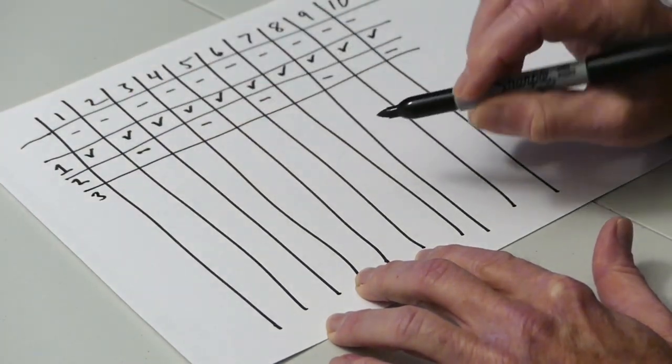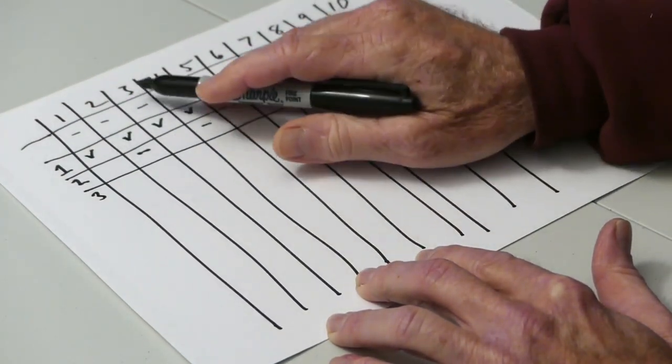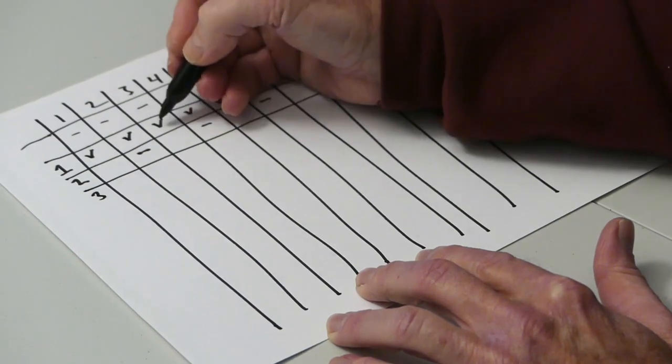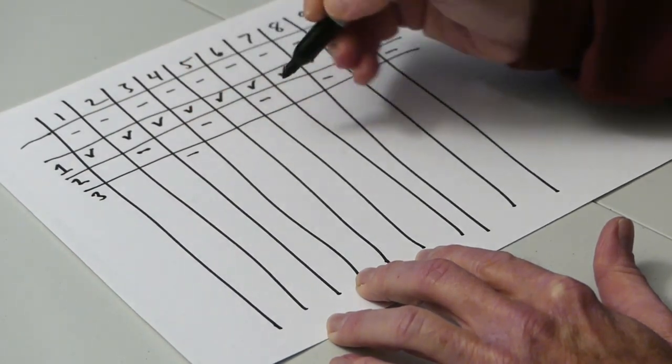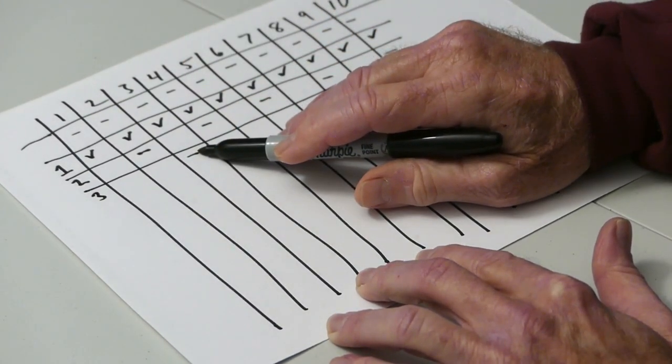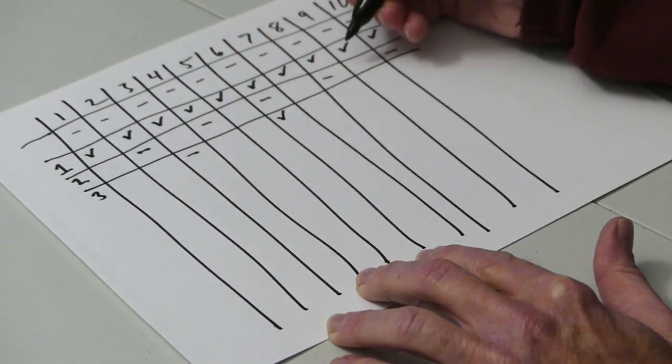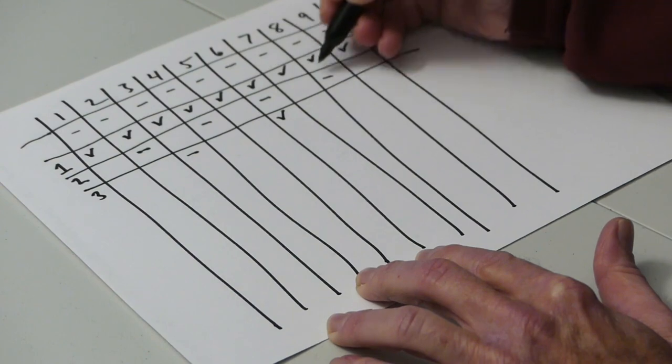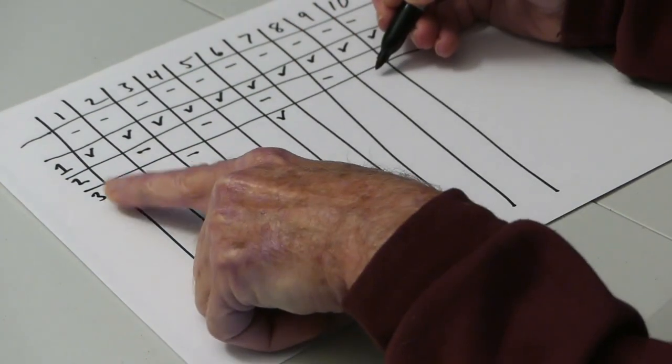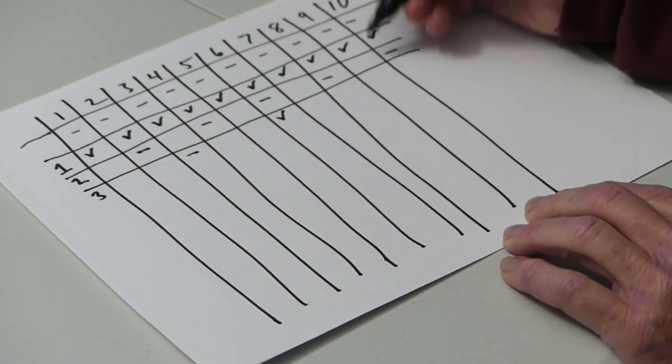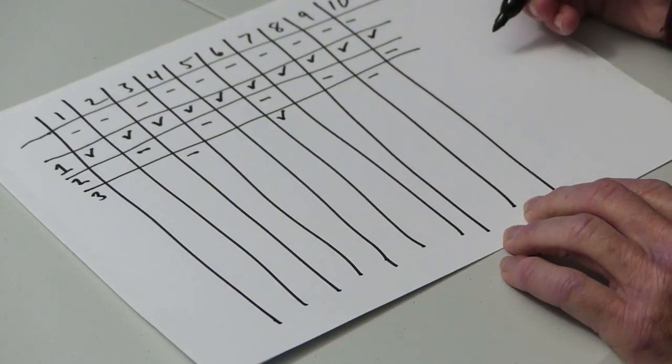Let's look at student 3. Student 3 starts at locker 3 and closes that locker, every third locker. 3 plus 3 is 6, opens locker 6. 6 plus 3, the student number, is 9, and closes locker number 9.